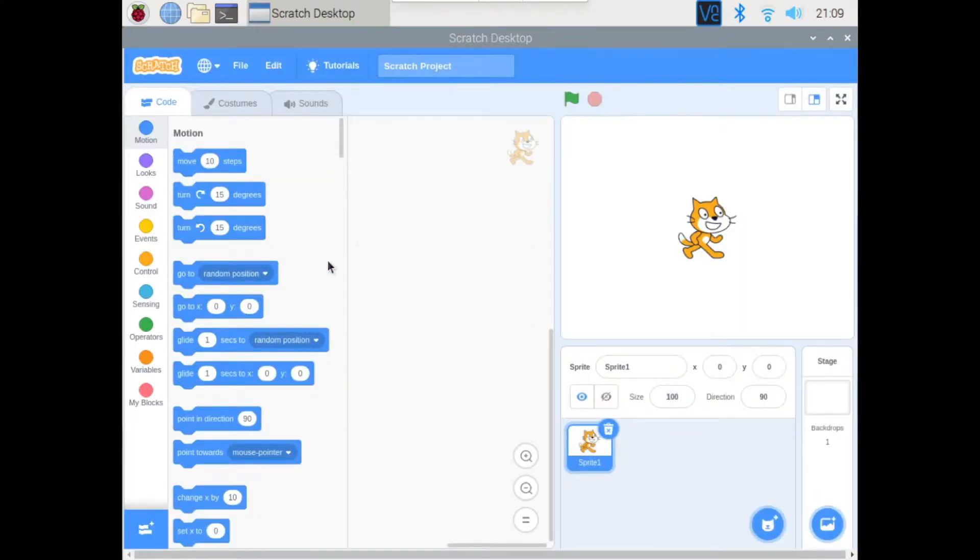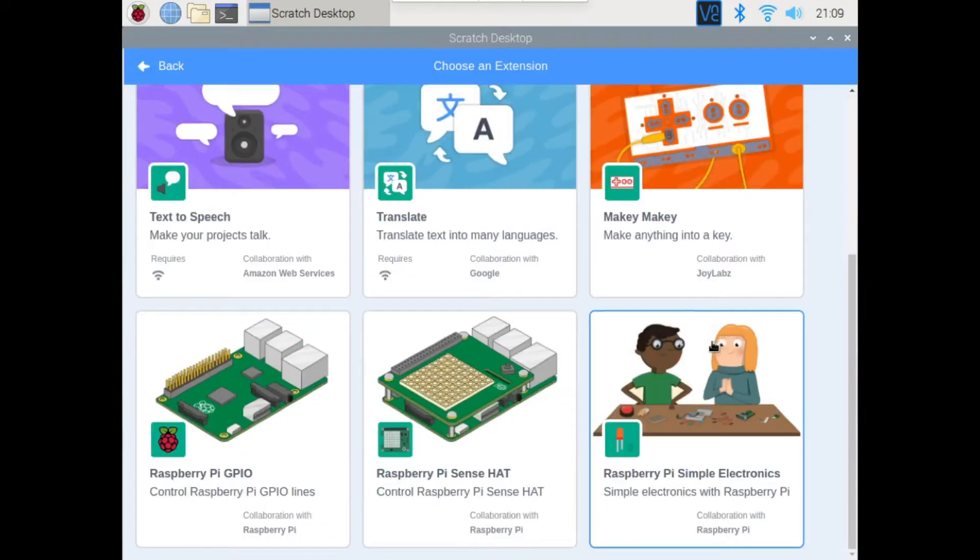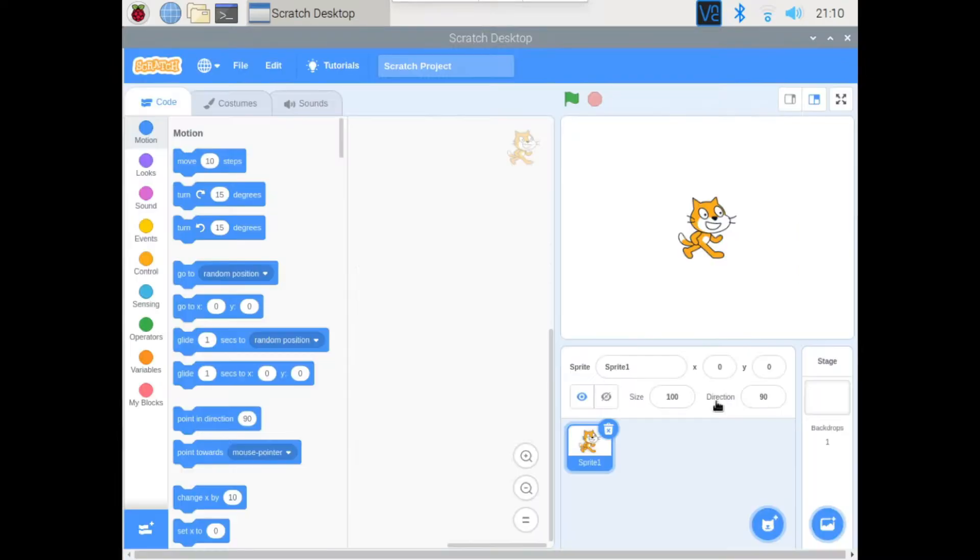This is Scratch 3 on the Raspberry Pi. In order to actually control an LED with a GPIO pin, we need to add an extension. To do that, bottom left corner, click on Add Extension and go down. Here we have three extensions for the Raspberry Pi. We actually need the Raspberry Pi Simple Electronics extension, so let's click on that.